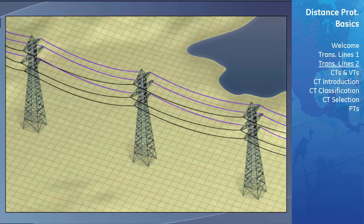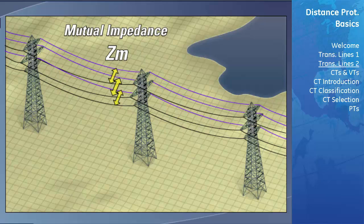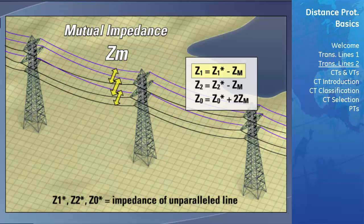When multiple transmission lines are aligned parallel to one another, their interactions induce an impedance on each other known as the mutual impedance, notated as ZM. When this occurs, the overall sequential impedances are affected as follows: the positive sequence impedance becomes the positive sequence impedance of the unparalleled line minus the mutual impedance; the negative sequence impedance becomes the negative sequence impedance of the unparalleled line minus the mutual impedance; and the zero sequence impedance becomes the zero sequence impedance of the unparalleled line plus two times the mutual impedance.